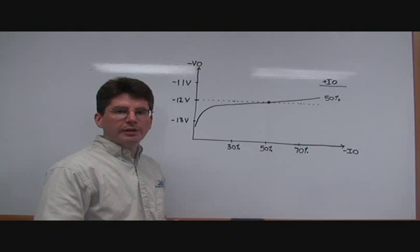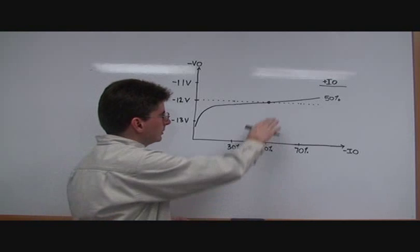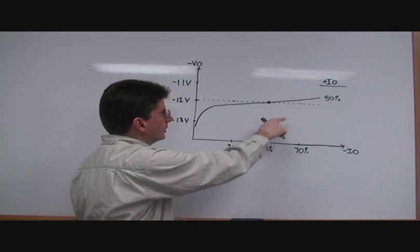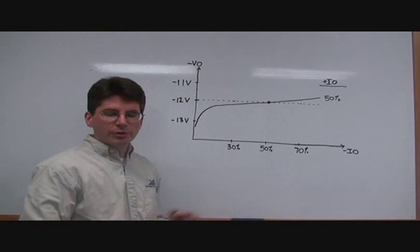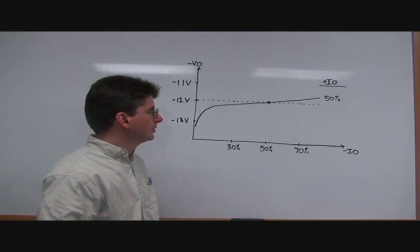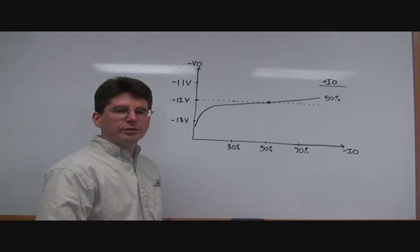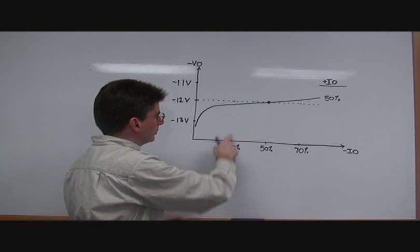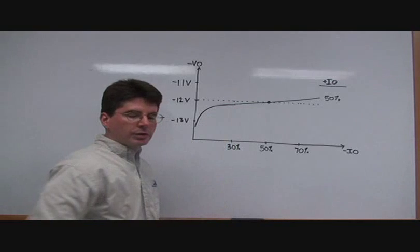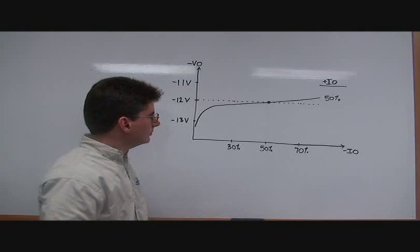If the load on the negative output increases in this direction, you can see that its voltage tends towards zero, towards negative 11 volts. If the load on the negative output decreases down to 30%, you can see its voltage increases slightly.